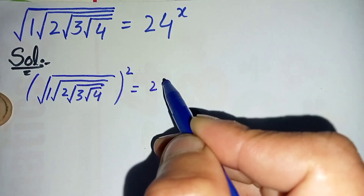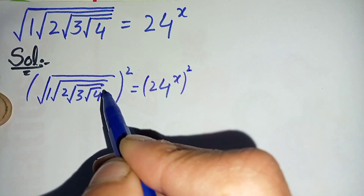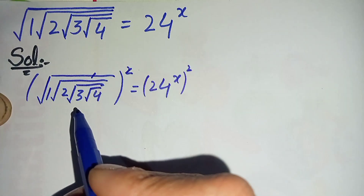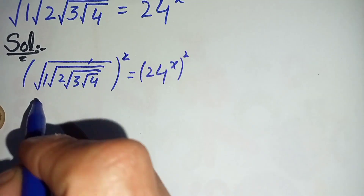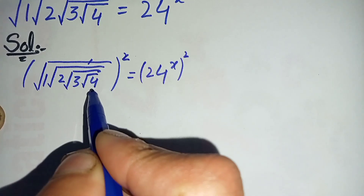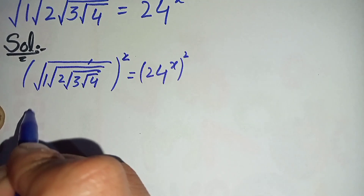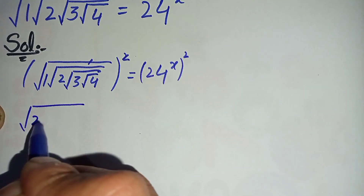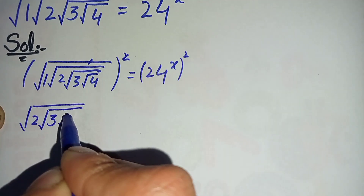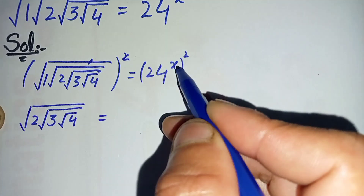Is equal to 24 raised to power x, whole square. In the left-hand side, this square root will be cancelled, so only 1 times square root of 2 times square root of 3 times square root of 4 will be left. But 1 times any number is the same number, so this becomes square root of 2 times square root of 3 times square root of 4.